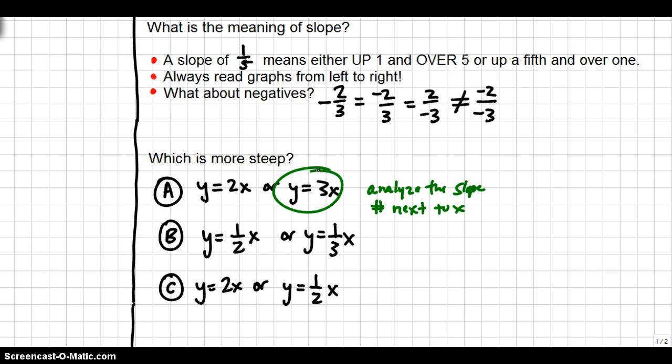What gets tricky for students is when they have to compare fractions. So it's important here to recognize which fraction is the greater fraction. If you think about dividing something into half or dividing something into thirds, the division of the half will be larger. So the half actually has more steep of a slope. You'll go up 1 over 2, which will be more steep than going up 1 over 3.